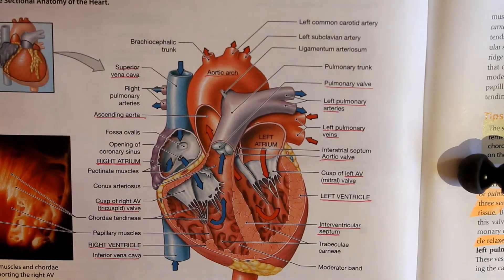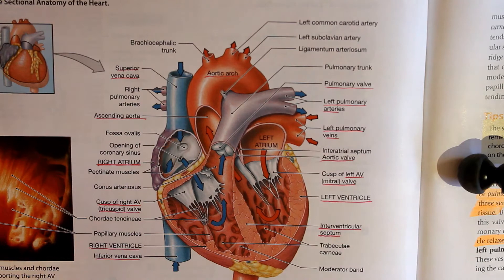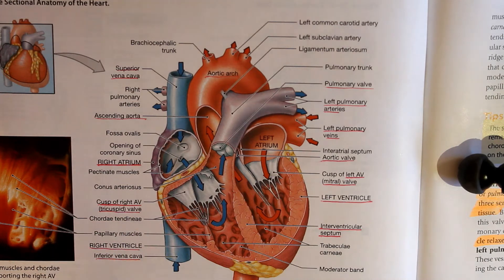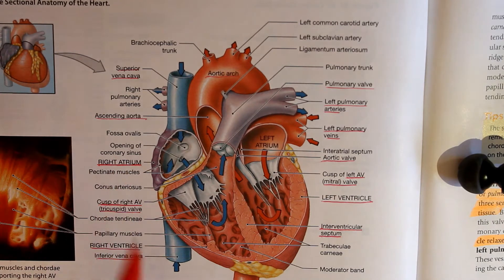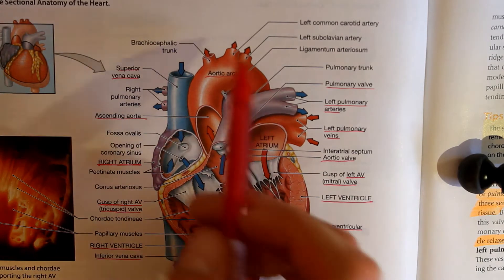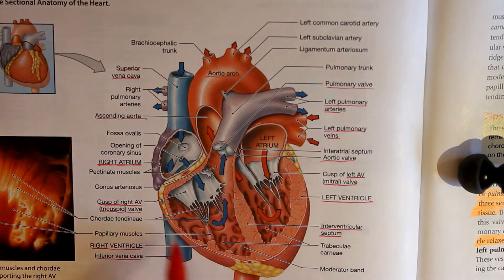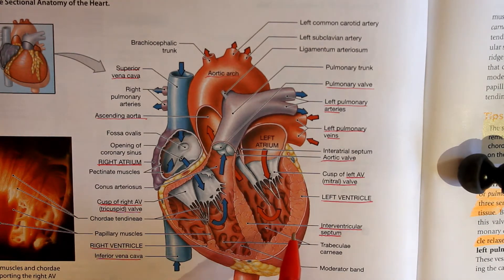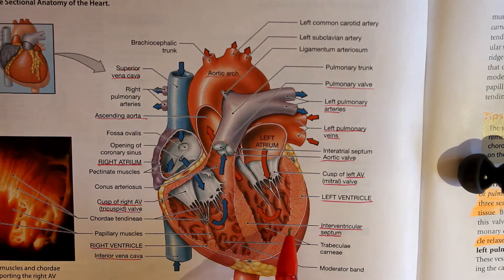Alright, here we've got our heart. Don't get overwhelmed by all of these labels — you do not need to know them all. I've underlined the ones in red, which are the ones we will be looking at. Let's talk about a cardiac cycle, or how blood travels through the heart. Here we've got our right side of the heart and here we have our left side. You can see the wall of the left ventricle is much thicker than the right side — this is one way you can determine which side of the heart you're looking at. The thicker side will be your left side.